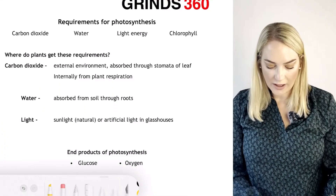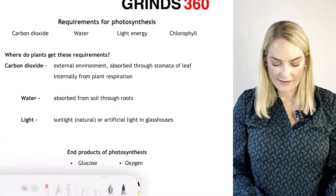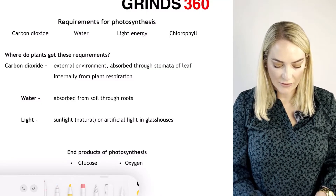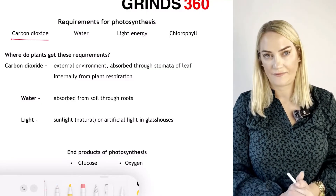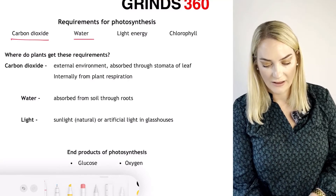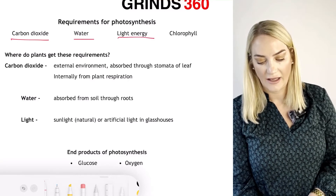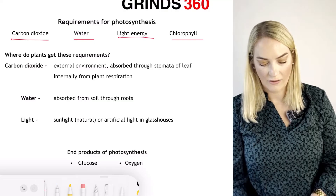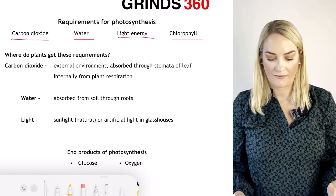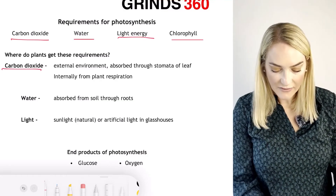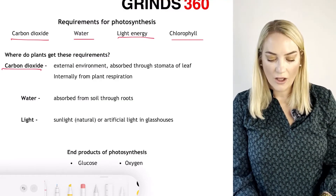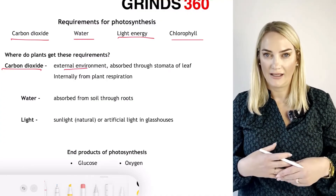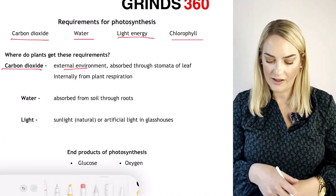What do we require for photosynthesis to take place? We need carbon dioxide, water, light, and chlorophyll. Where do we get these? Carbon dioxide can be absorbed from the environment through the stomata by diffusion into the leaf.